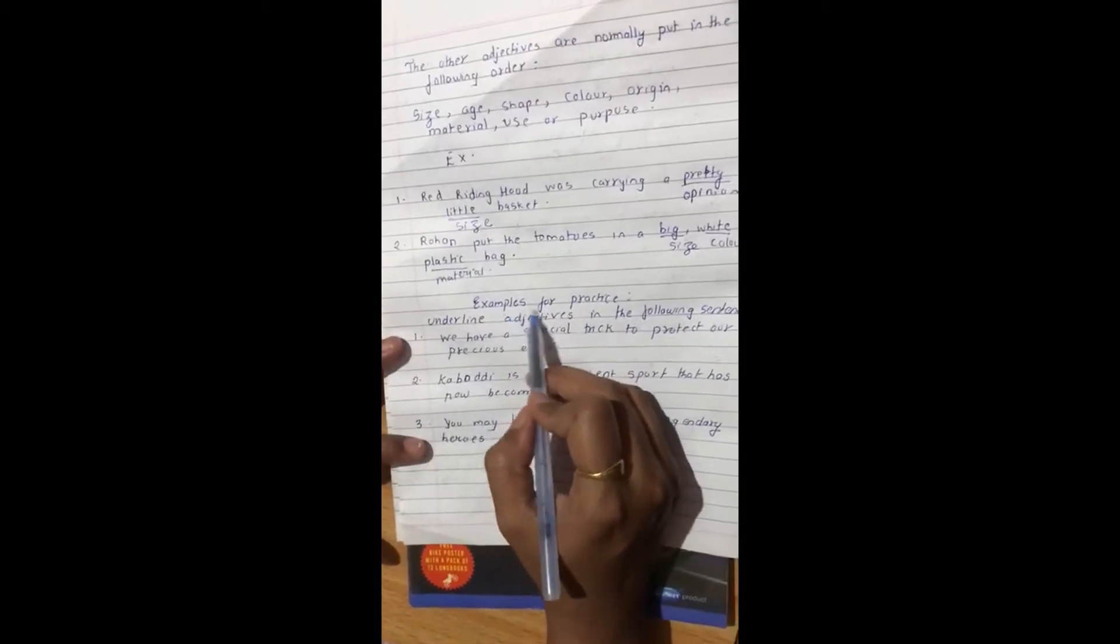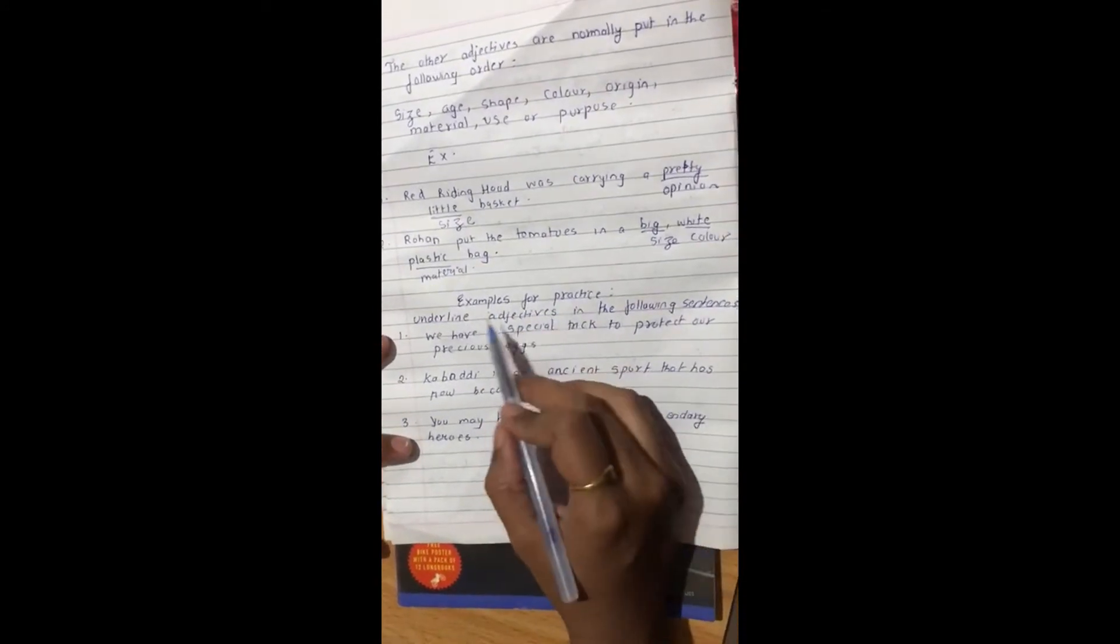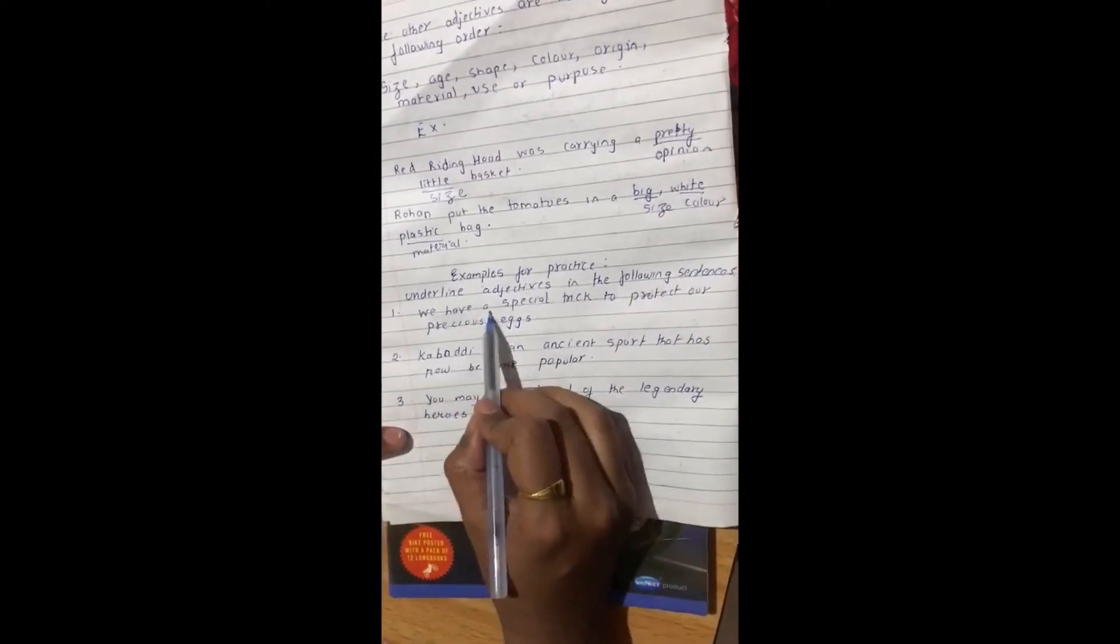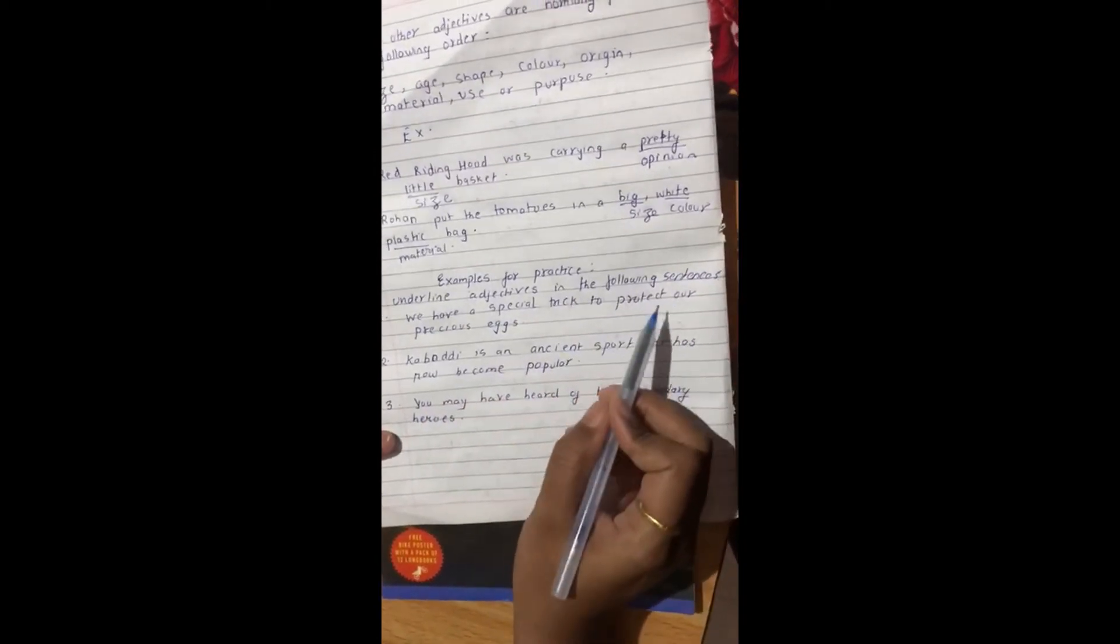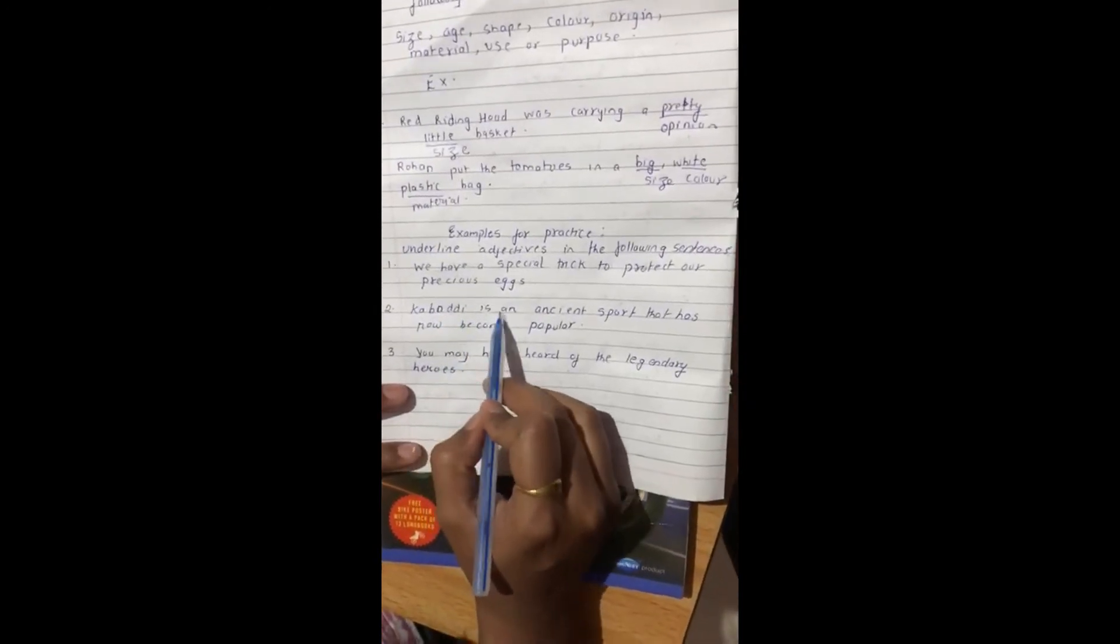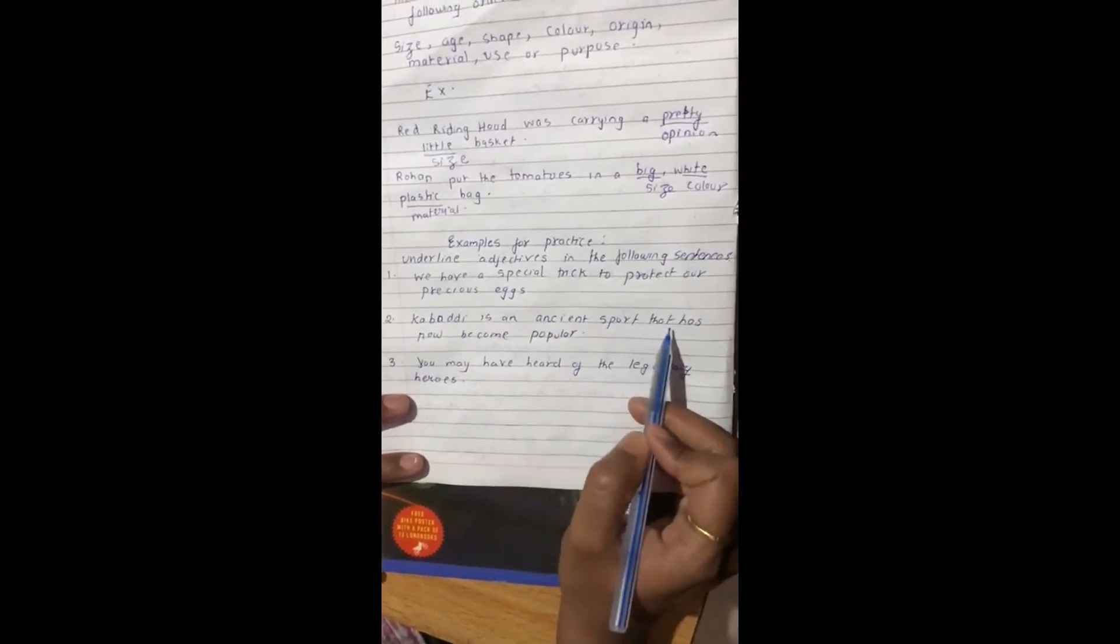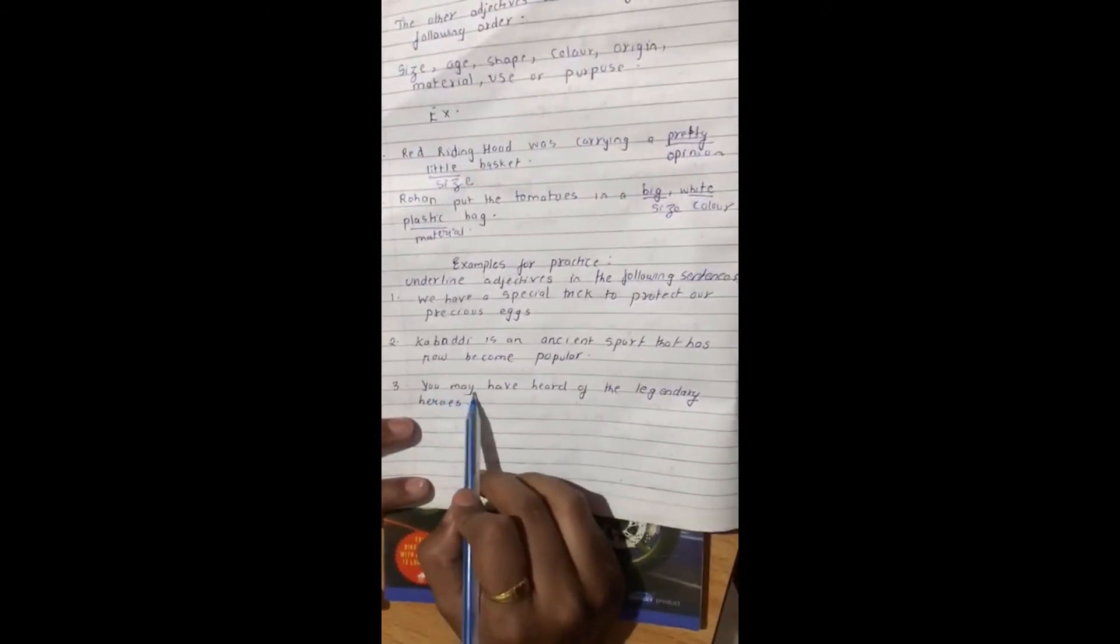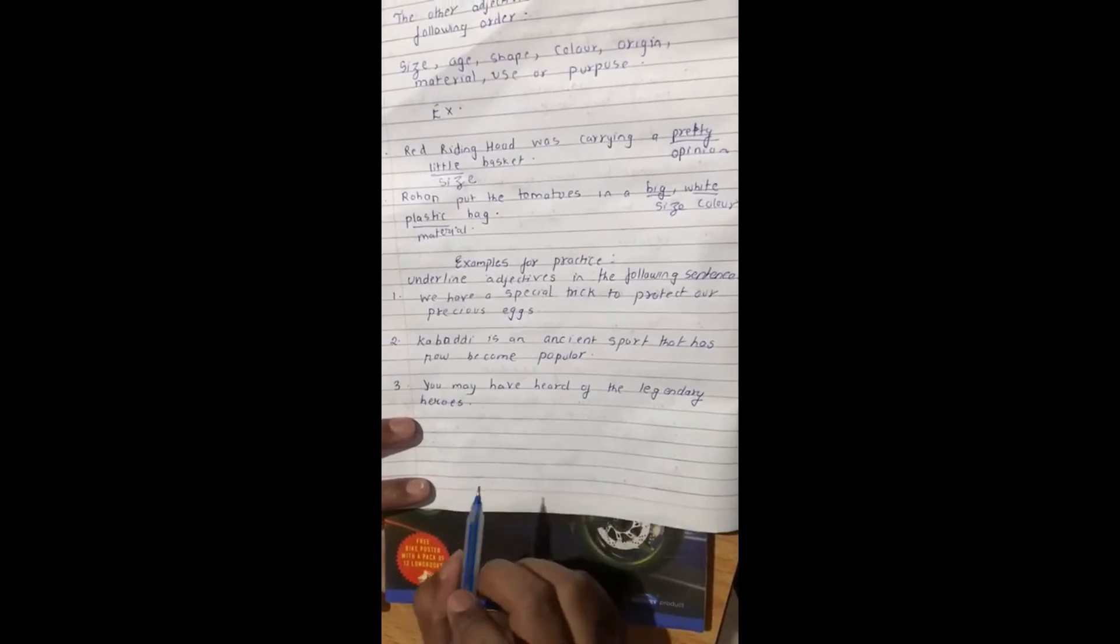Now, these are some examples for practice. Underline adjectives in the following sentences. First is, we have a special trick to protect our precious egg. Second one is, Kabadi is an ancient sport that has now become popular. You may have heard of the legendary heroes.